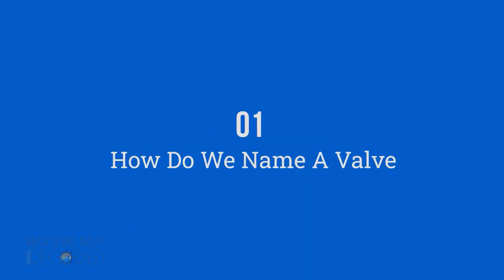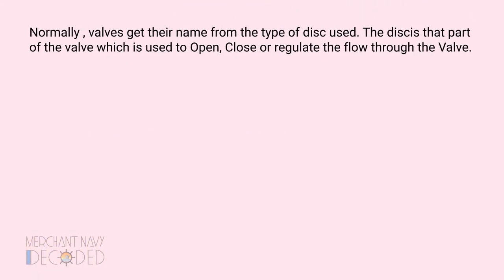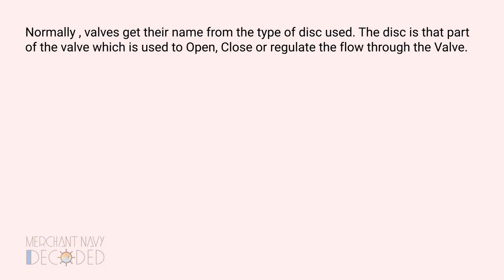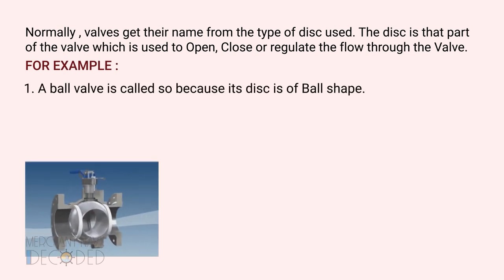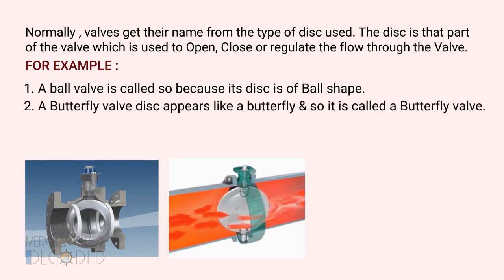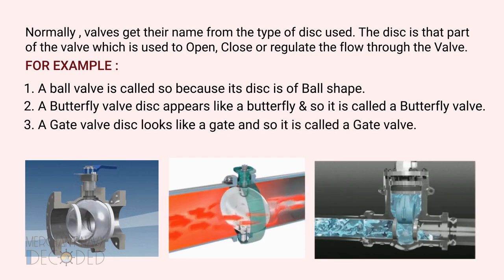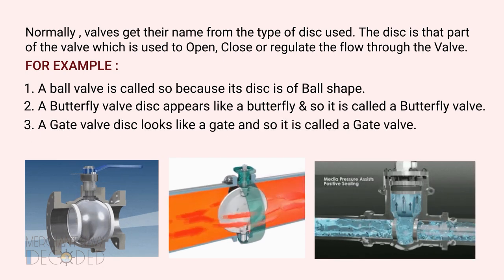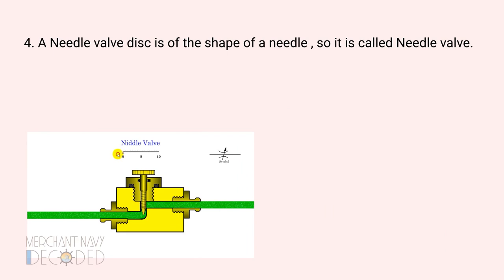Let us start with how do we name a valve. Normally, valves get their name from the type of disc used. The disc is that part of the valve which is used to open, close, or regulate the flow through the valve. For example, a ball valve is called so because its disc is of ball shape. Similarly, a butterfly valve disc appears like a butterfly, a gate valve disc looks like a gate, and a needle valve disc is of the shape of a needle.